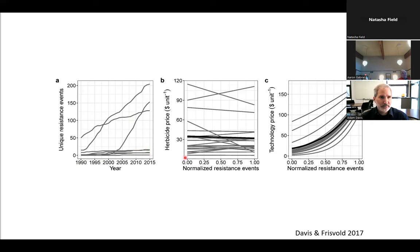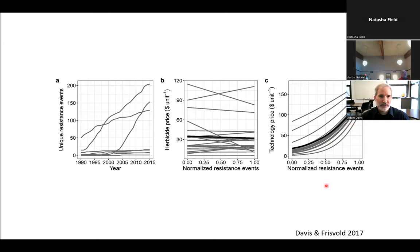The number of resistance events is going up. And at the same time, with the exception of one compound, everything is either flat or going down in terms of herbicide price. So the cost of resistance is not getting factored into products, which we should all be concerned about because there's no incentive for people to use them carefully.